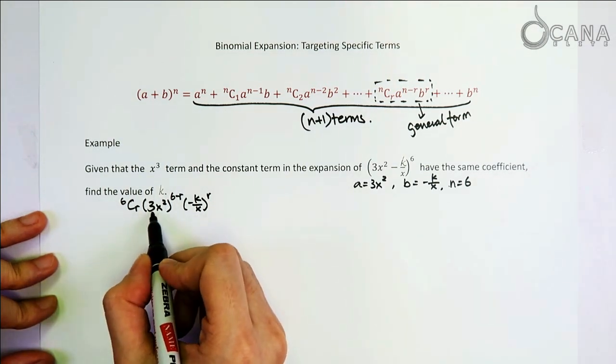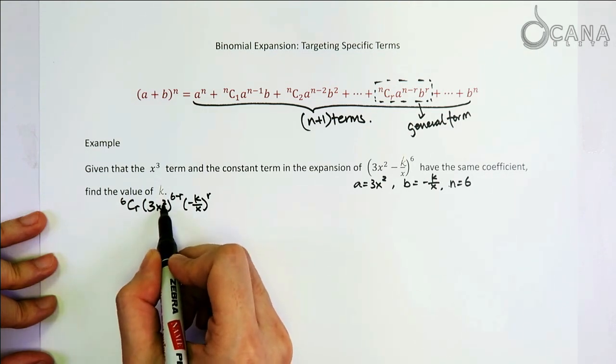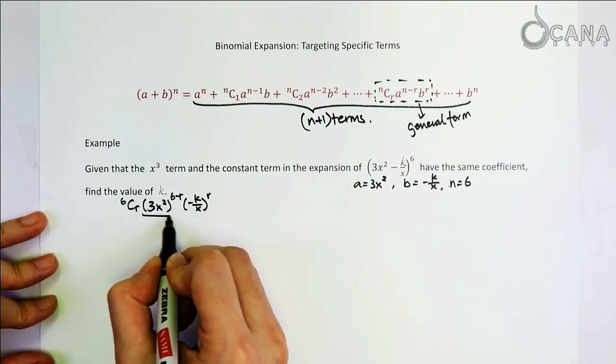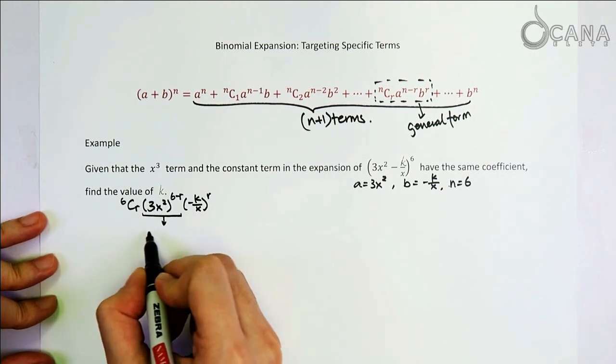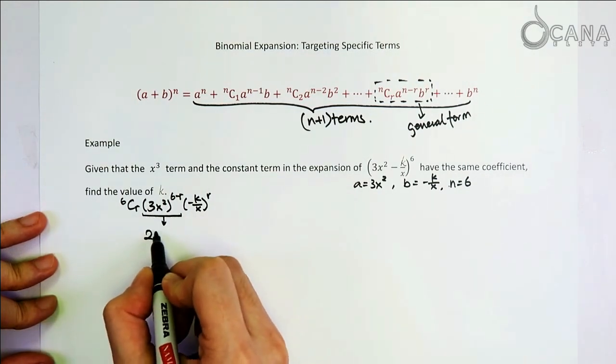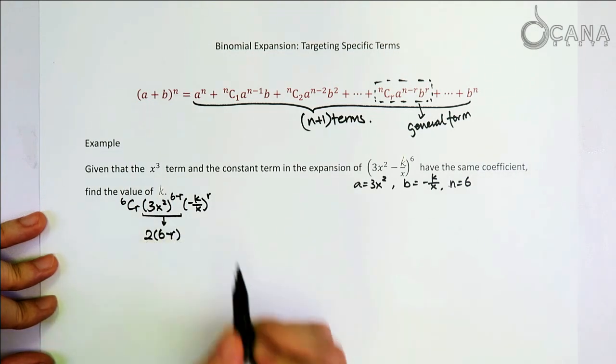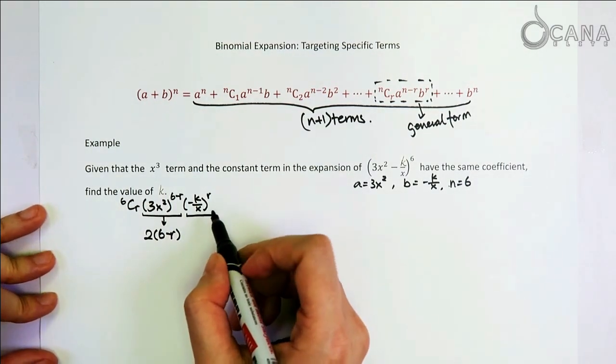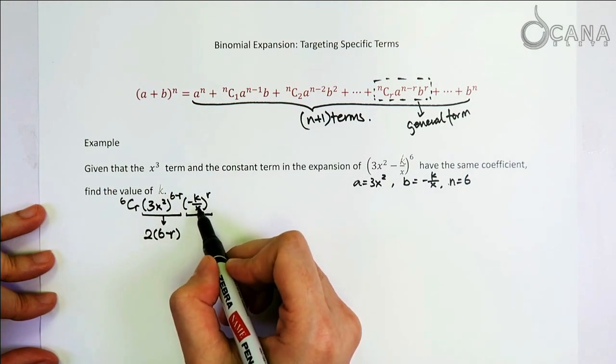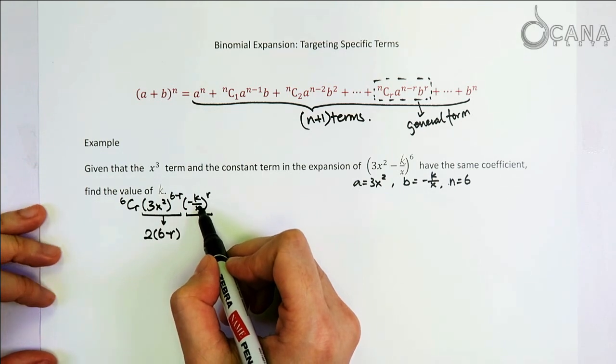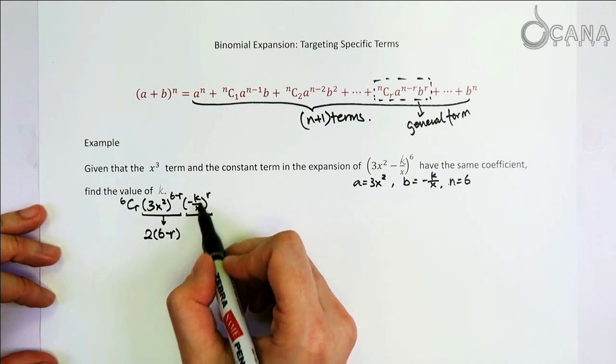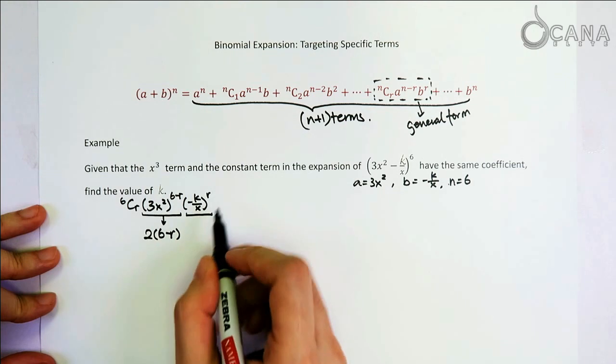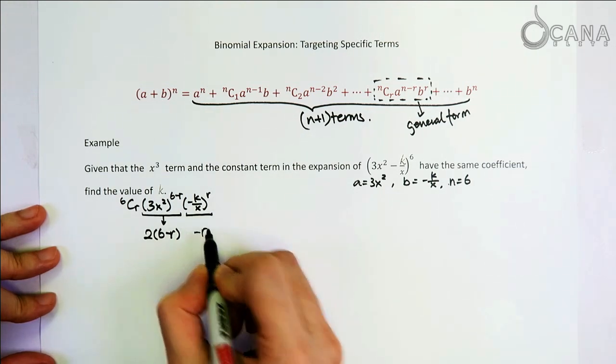And then the second thing, inside of the bracket is x squared, and then we raise it to the power of 6 minus r again. So by the index rule, we know that from this middle factor here, the power of x that it contributes is 2 times 6 minus r. And then let's focus on the third factor of this term. Inside of the bracket, we've got an x in the denominator. So actually the power of x inside of the bracket is negative 1. So from this third factor here, the power of x should be negative r.